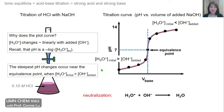Another important feature of the titration curve is that the steepest pH changes occur near the equivalence point. The slope of the curve is very gradual, then shoots up very steeply right around the equivalence point before becoming gradual again. This is typical for all acid-base titrations.